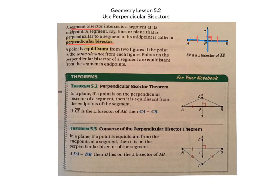A point is equidistant from two figures if the point is the same distance from each figure. Points on the perpendicular bisector of a segment are equidistant from the segment's endpoints. So let's look at these two theorems. Theorem 5.2: the Perpendicular Bisector Theorem.